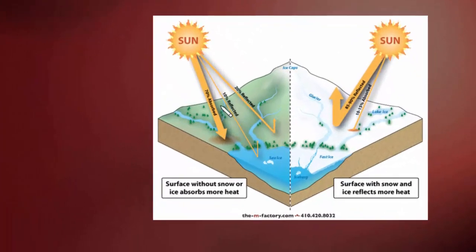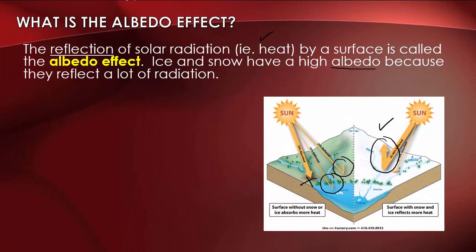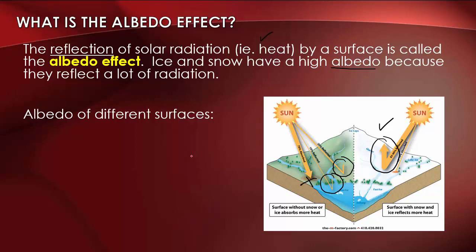In this diagram here, you can see the sun shining down on the earth. There is radiant energy absorbed, but energy can also be reflected. You can see off the water there is some reflection, and off the land there is some reflection as well — that's important for keeping the planet cool. When the surface has snow or ice, there is a lot more reflection, a higher albedo effect, which is the reflection of solar radiation, i.e. heat, from the surface.